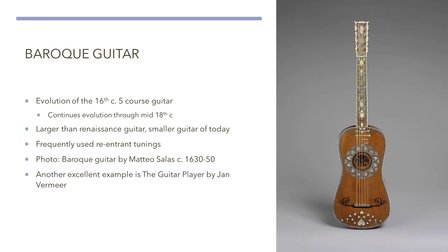Continuing with the evolution of the five-course guitar, we move to the Baroque guitar. It's a direct evolution from the five-course guitar of the 16th century. Its evolution continues through the mid-18th century. It's larger than the five-course Renaissance guitar, though smaller than today's guitars. An interesting detail is that the guitar frequently used what was referred to as re-entrant tunings. This type of tuning is different from what we're used to in modern guitars. The common tuning you would use today, and the tuning you would have used in the 16th century, has the highest-pitched string on one side of the instrument and the lowest-pitched string on the other, with all of the strings changing in pitch in sequence.